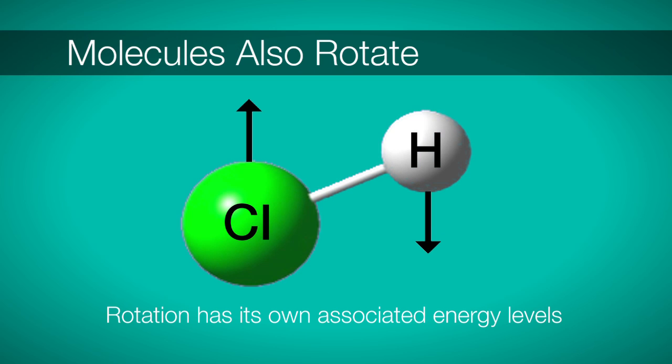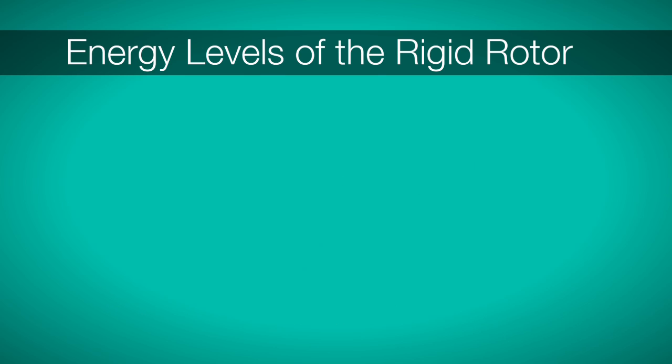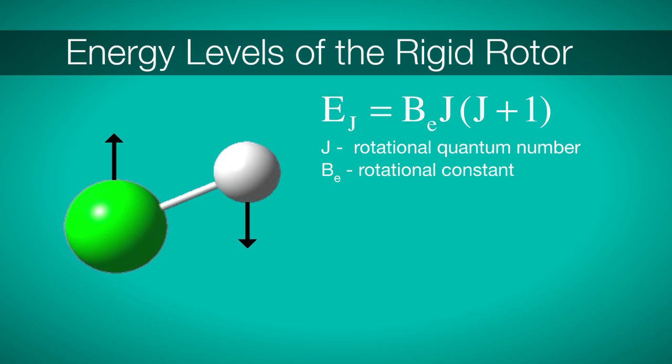But vibration is only one motion we expect in molecules. Quantum mechanics also predicts quantization of the rotations of a molecule. We can calculate the rotational energy levels by solving the Schrodinger equation for the rigid rotor. By doing this, we find the energy levels of the rigid rotor are given by the simple expression EJ equals BE J times the quantity J plus 1.